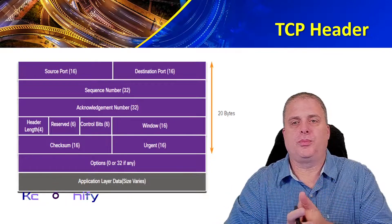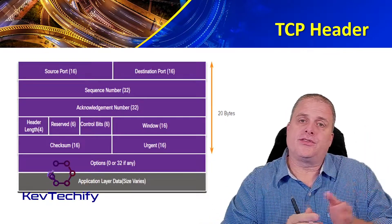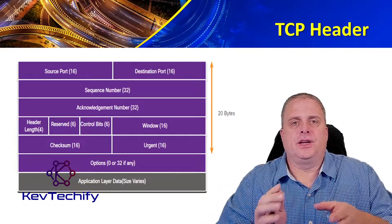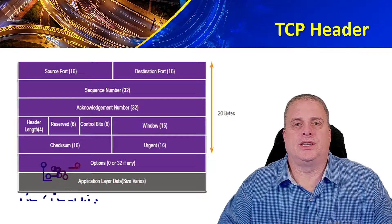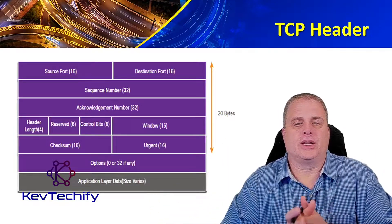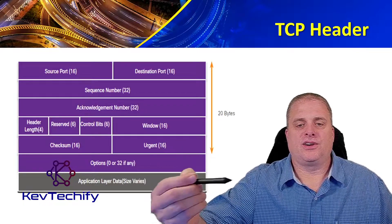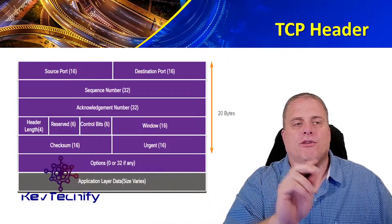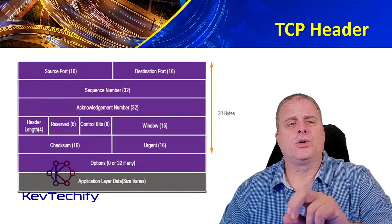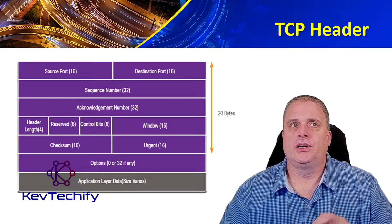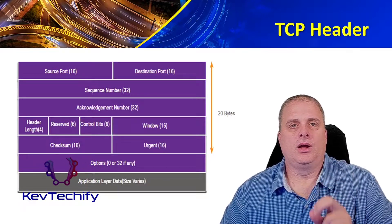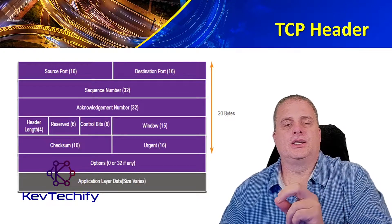Here we have our TCP header. This is our representation of it. It starts at the top row on the left side, and we go across. The first field in the top left is the source port, and in parentheses we have 16, meaning it is 16 bits long. Going across the entire top row, that is 32 bits or 4 bytes. The first five rows are 20 bytes long — four bytes going across, five rows, that's 20 bytes — that is the TCP header. The first row contains source port and destination port, a 16-bit field used to identify the application. The source is where it's coming from, what application on the computer. The destination is where it is going.